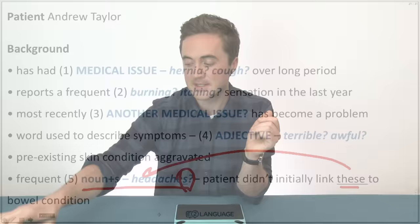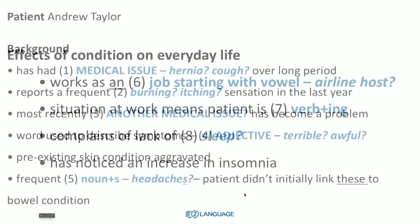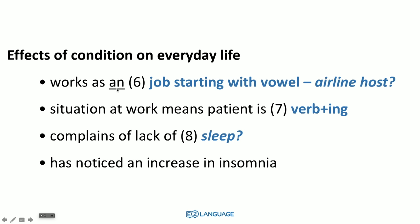These are things that through practice you'll get very good at, and obviously the better your English is, the more you'll pick up on these naturally. These are extremely helpful hints in that 30-second reading time. Number six — 'works as an' — it's going to be a job starting with a vowel, maybe an airline host or an optometrist, something like that. You're predicting a job type starting with a vowel. Number seven: 'situation at work means patient is' — it'd just be an adjective, like nauseous or sleepy.